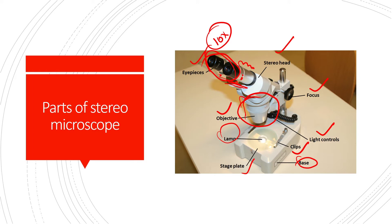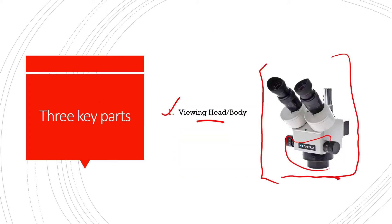The parts of a stereoscopic microscope include two eyepieces with a minimum magnification of 10x, a stereo head, an objective, and a stage plate for keeping specimens. The stage clips, light controls, and focus knob are also key parts. There are mainly three key components of the stereoscopic microscope.